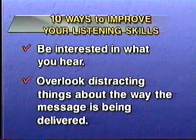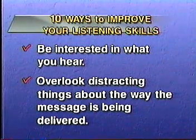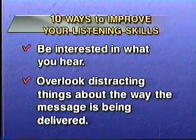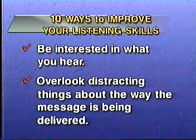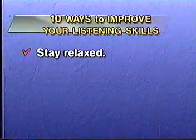Second, overlook distracting things about the way the message is being delivered. If someone has a lisp or they stutter, don't let it irritate you — such speech impediments are things you must overlook, otherwise you might turn off the sender from communicating with you. Number three, stay relaxed. Even though you may be provoked, you must stay calm and keep your cool — otherwise it will interfere with your understanding and listening. Don't let someone else's prejudice get in the way of hearing the complete message. Number four, try to get the message, not just the facts. Find out what the person is really trying to say to you.